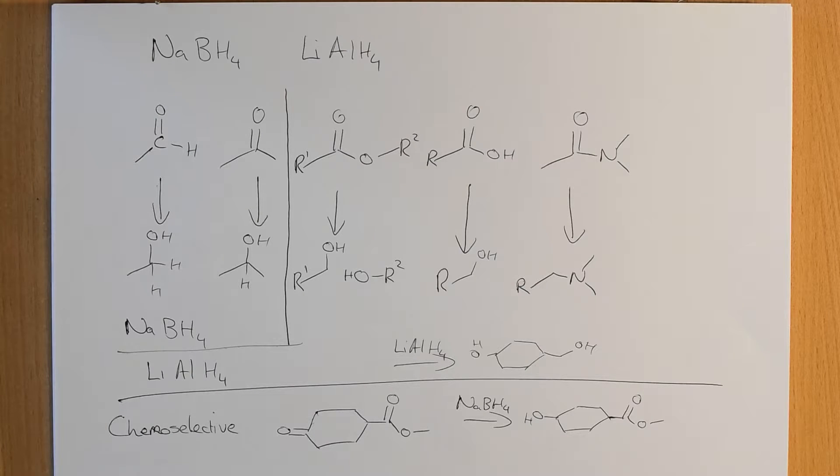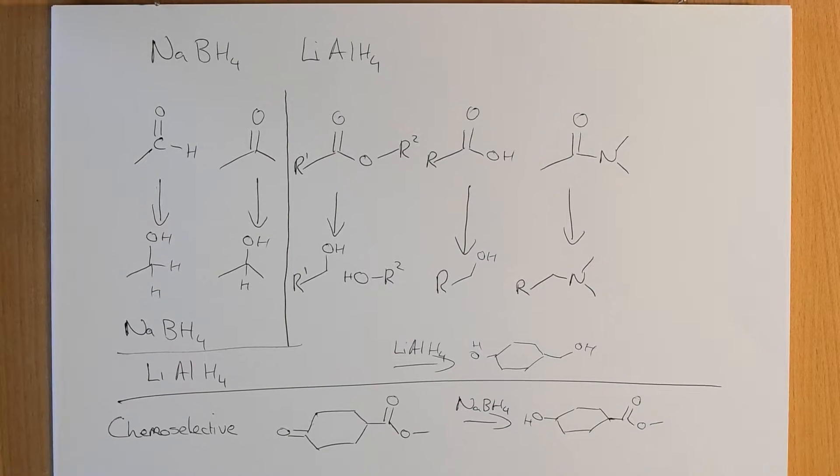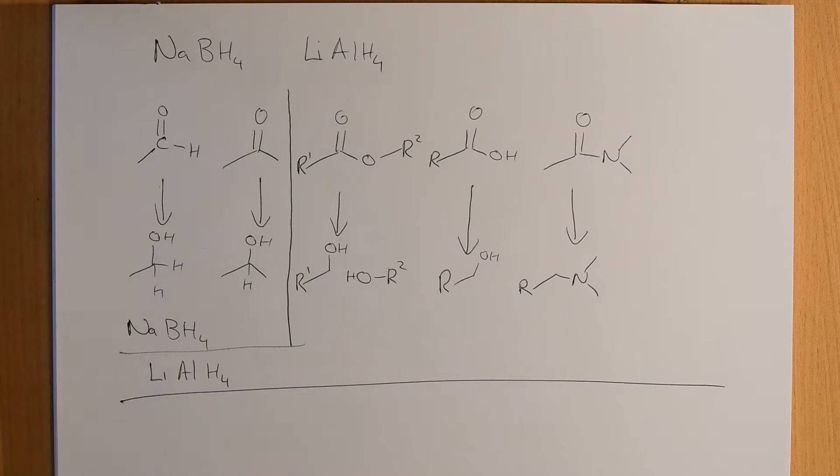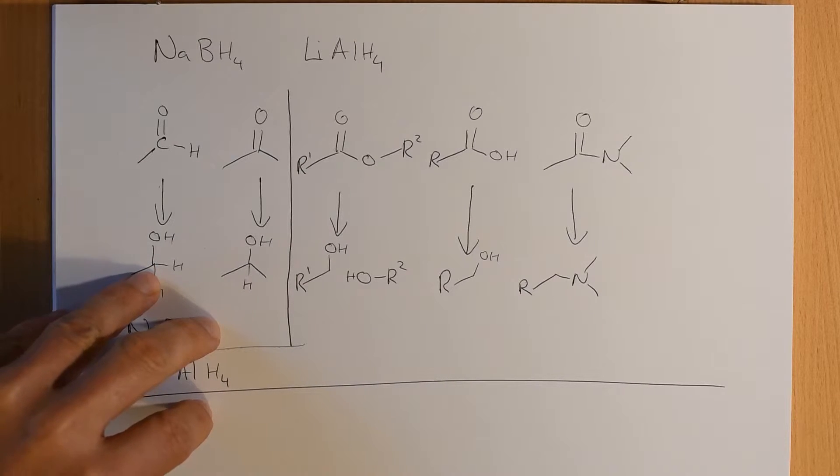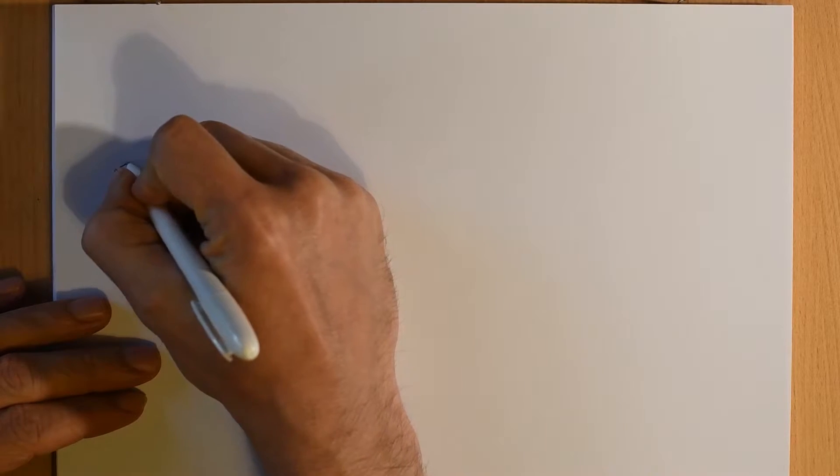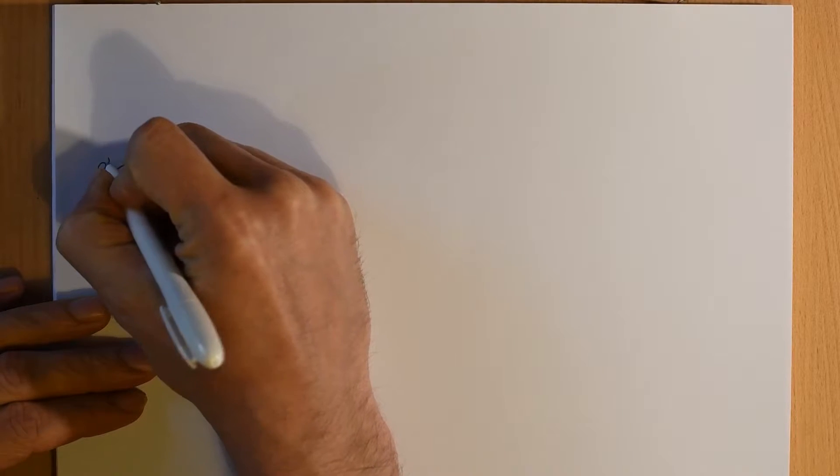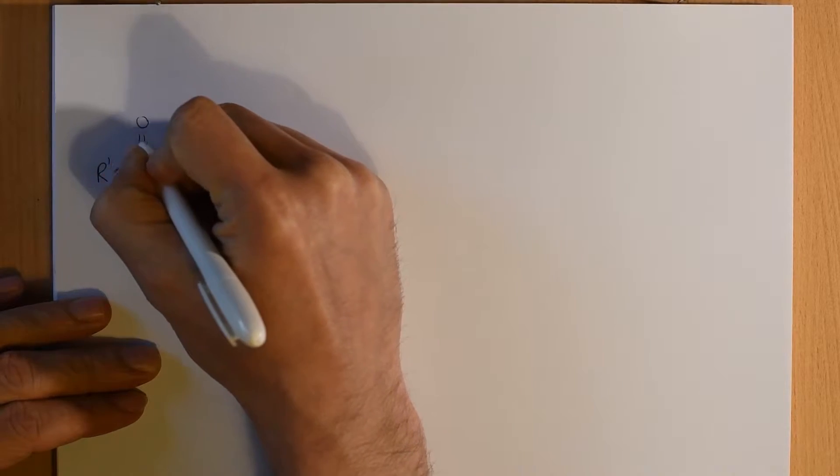The next thing I want to do is have a quick look at the conditions that you use for sodium borohydride reductions, and the conditions that are used for lithium aluminum hydride reductions. So, let's start off with sodium borohydride. Let's take our aldehyde. We'll make this any aldehyde. It doesn't matter what it is.